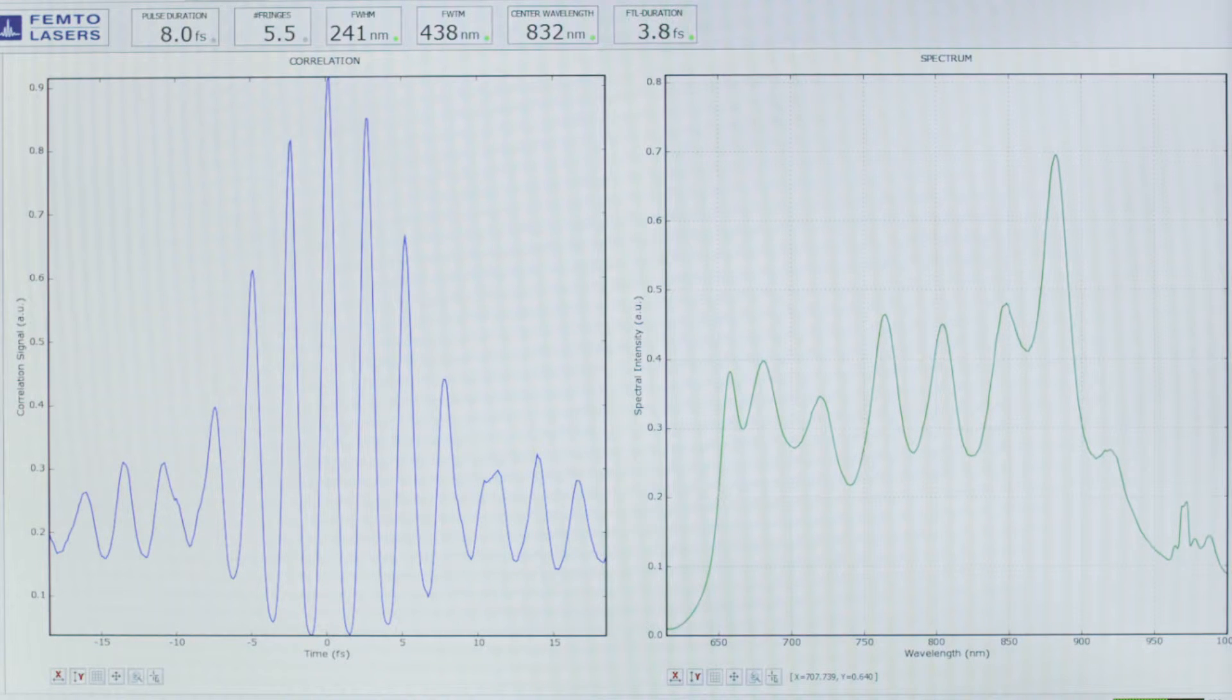So what you can see here on that screen is the autocorrelation and the spectrum of the Rainbow. We measure the autocorrelation after the CEP4 module. And the dispersion in particular coming from the acousto-optic modulator is compensated by chirped mirrors. So we end up here with 8 femtoseconds. It's not really the shortest pulse we can get, but for this project we don't care.